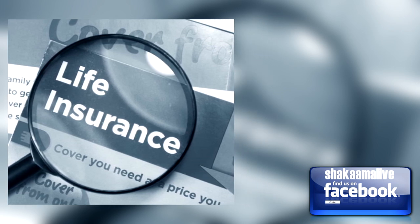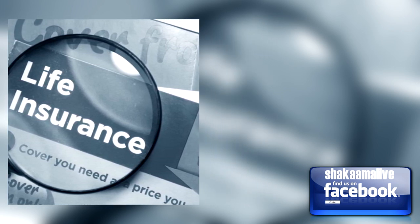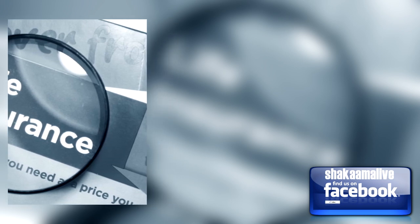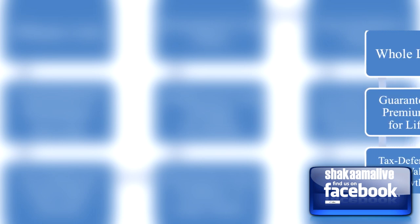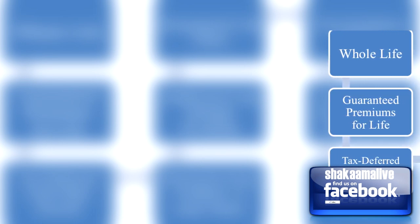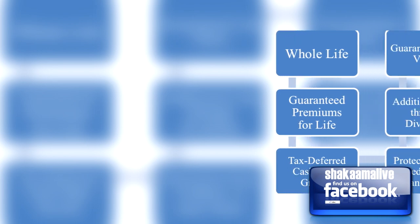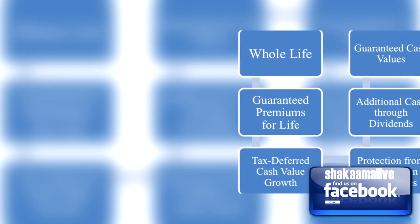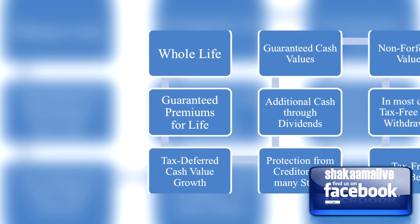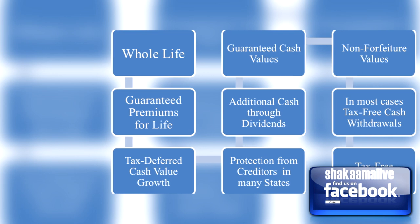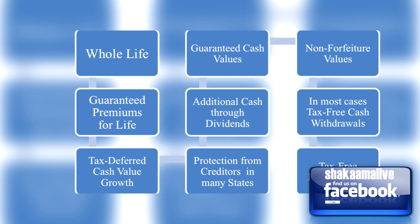to build up tax deferred. Here's a definition of cash value life insurance: a type of life insurance policy that pays out upon the policyholder's death and also accumulates value during the policyholder's lifetime. The policyholder can use the cash value as a tax-sheltered investment. The interest and earnings on the policy are not taxable, as a fund from which to borrow, and as a means to pay policy premiums later in life, or they can pass it on